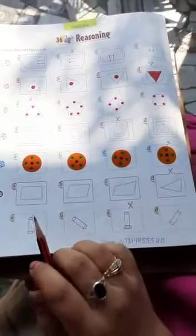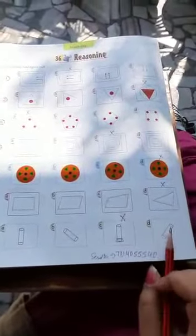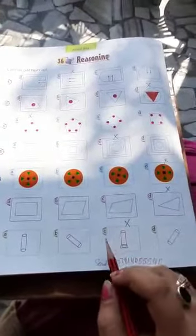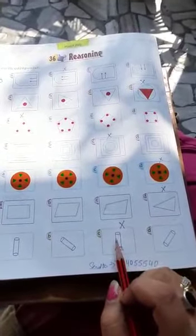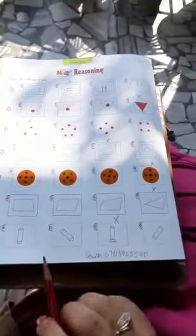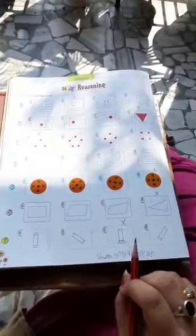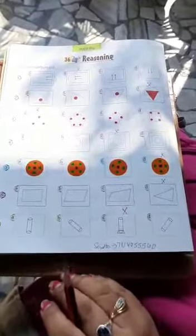Now in seventh question. In seventh question, A, B and D figures show a cylinder. Whereas C figure shows a cylinder and a plane. So this is the odd one out from seventh question. So this was our chapter number 36.